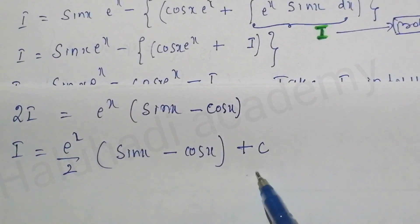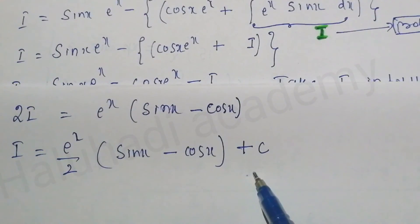This is the answer for the given problem: i = (e^x / 2)(sin x minus cos x) + C. Thank you, students.